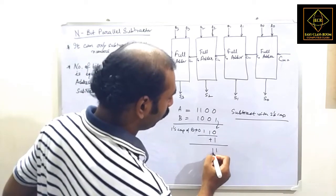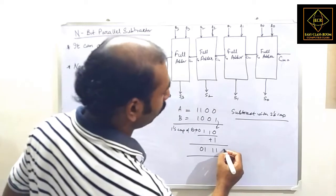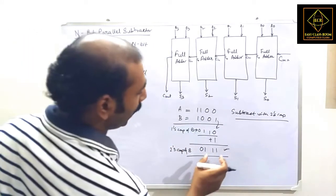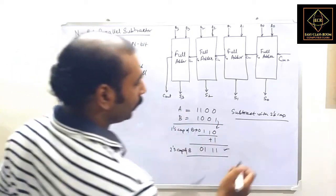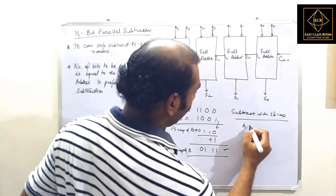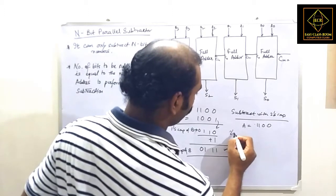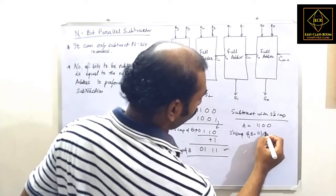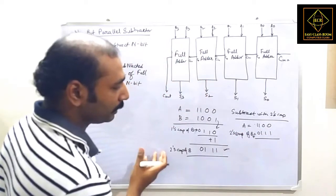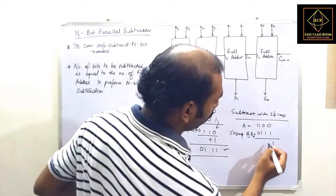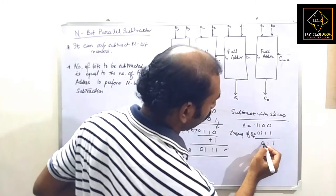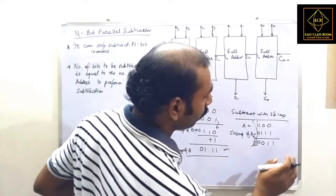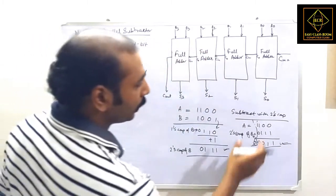With that one's complement form we add one. So the two's complement of B becomes 0111. Now we add this with A: A equals 1100 and two's complement of B equals 0111. Adding these gives a result with a carry out, which is neglected. This is how the two's complement subtraction works.